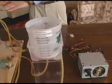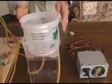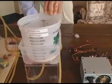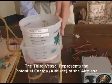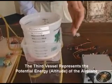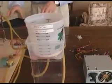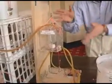...the kinetic energy is converted into potential energy represented by the altitude of the airplane. And the third vessel has a graduated scale that represents the altitude of the airplane. There are a number of hoses that connect these vessels to allow the energy to flow between them.